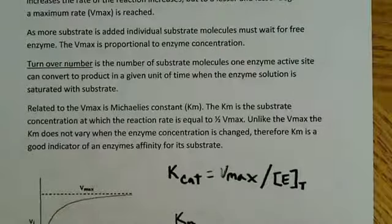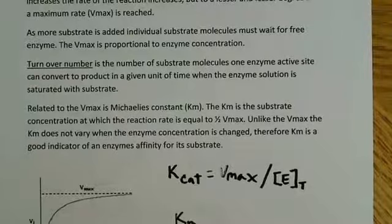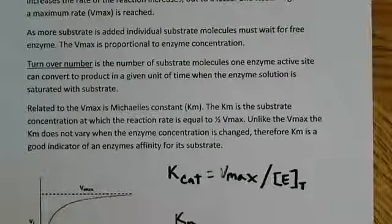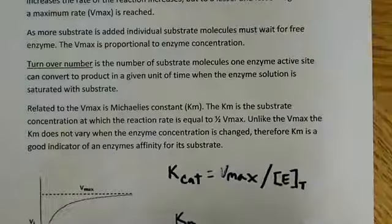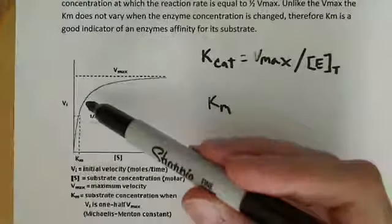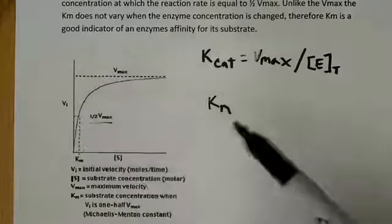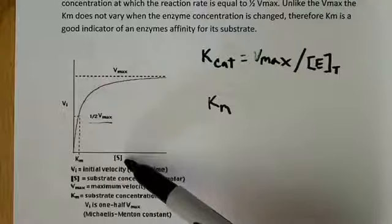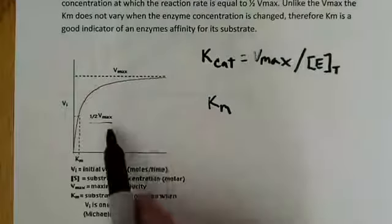We talked about affinity for oxygen when discussing hemoglobin and myoglobin, and that's why hemoglobin and myoglobin are good ways to start thinking about enzymes — they exhibit a lot of the same properties. What we're talking about here with the Km is enzyme affinity — how tightly does this bind? Just like with myoglobin, where oxygen binds really tight even at very low concentration, here the substrate is binding to the active site of the enzyme really tightly even at fairly low concentration. And the Km, once again, is just equal to one-half Vmax.